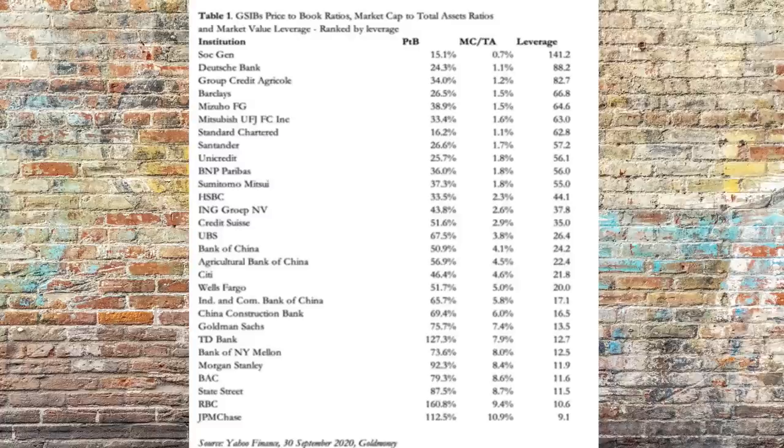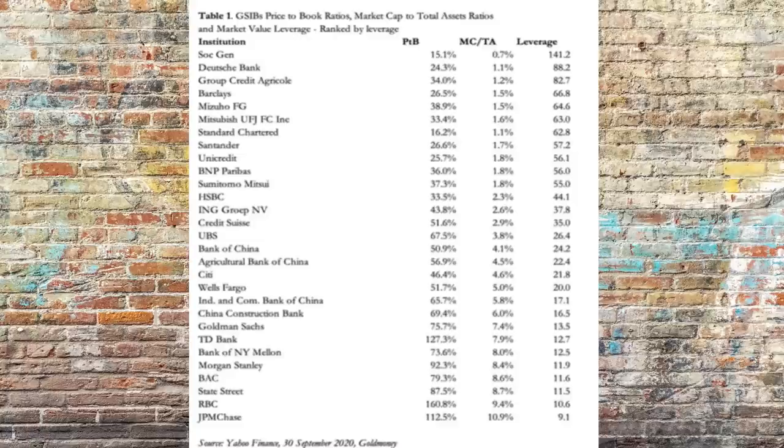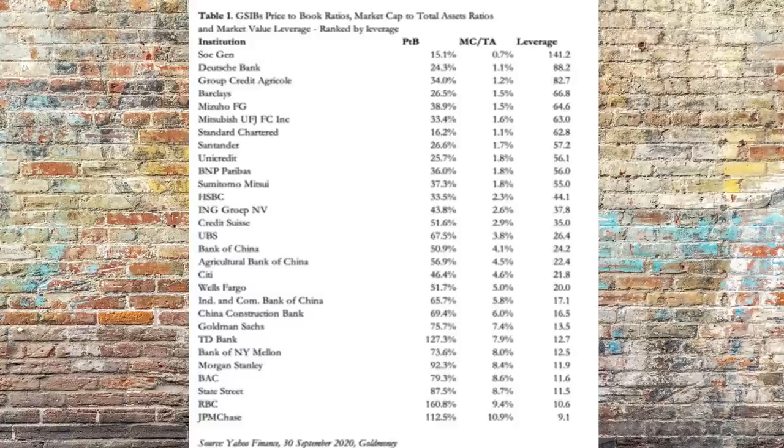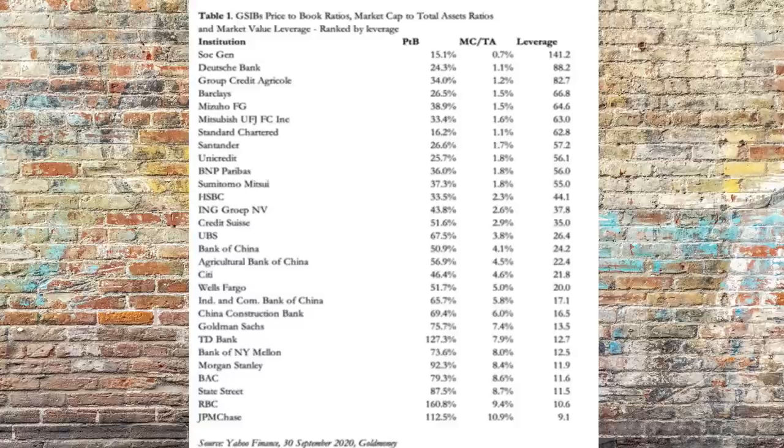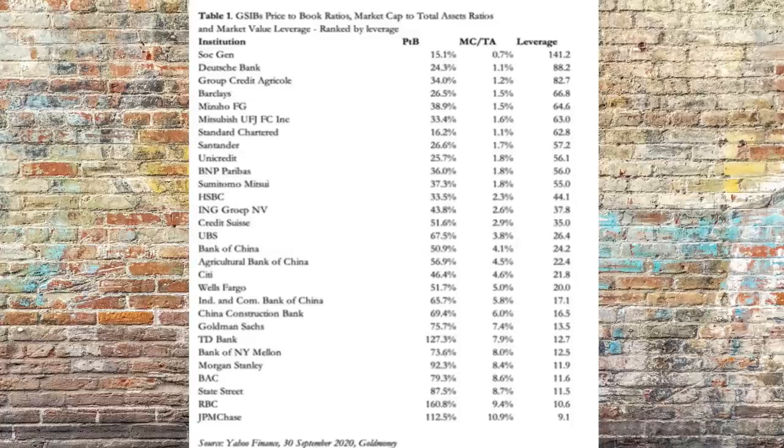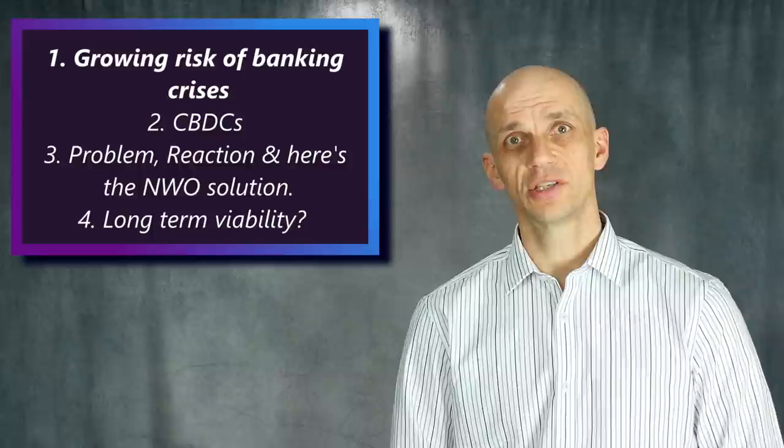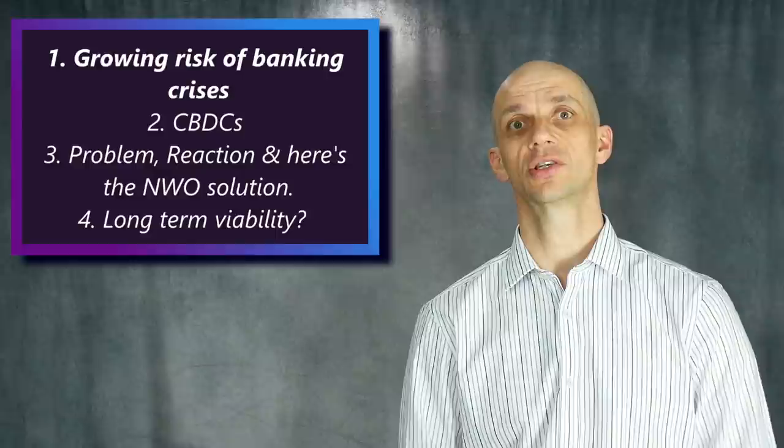Moreover, this excellent table highlights the global systemically important banks in order of the banks with the greatest apparent risk. Top of that list is Societe Generale where its price to book ratio is 15.1 percent. That's the company's current market price as a percentage of its overall book value or balance sheet assets. The second column highlights the bank's market capitalization to total assets and finally the leverage of the banks. Clearly there is enormous vulnerability amidst these large banks which pose a threat to the entire global banking system.